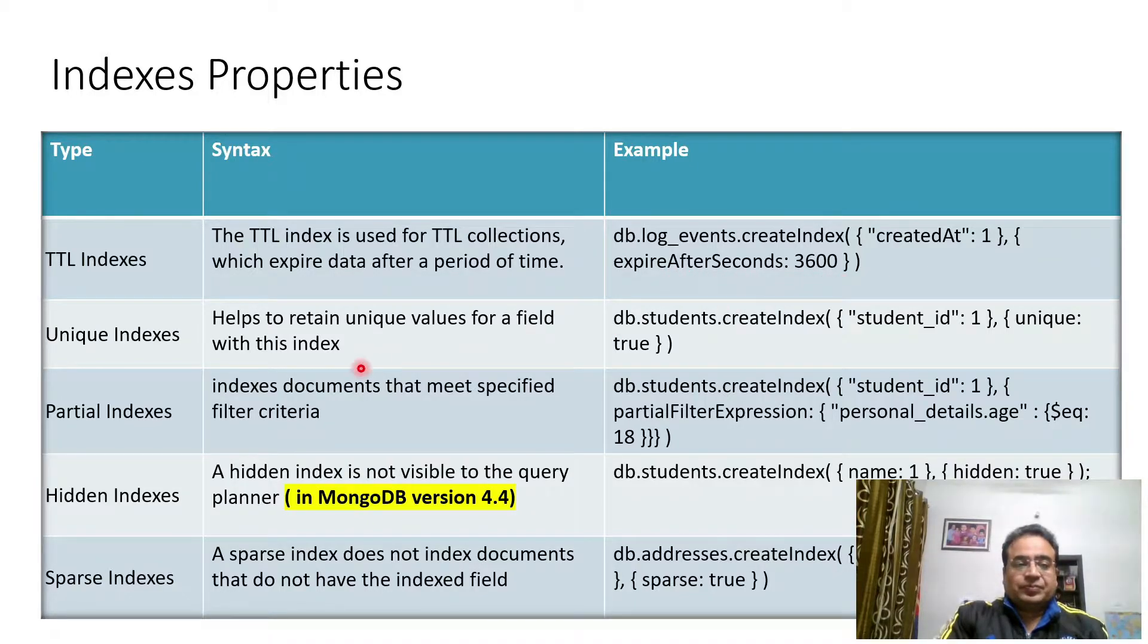Then we have unique indexes. It helps to retain unique values for a field with this index. On which field we want to create an index, ascending or descending, and then unique true. We cannot have duplicate values of student ID. We can have only one value of student ID as null but no more null values for student ID field. That is the advantage of having unique indexes. By default underscore ID is the unique index in MongoDB.